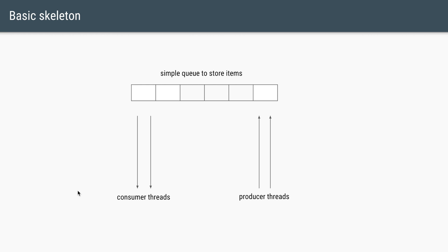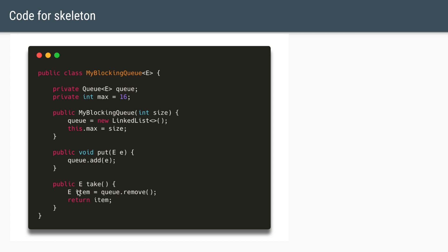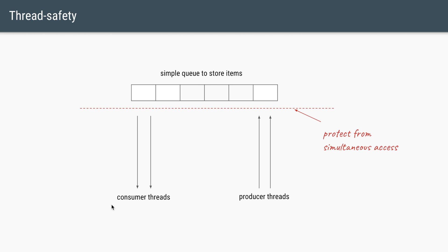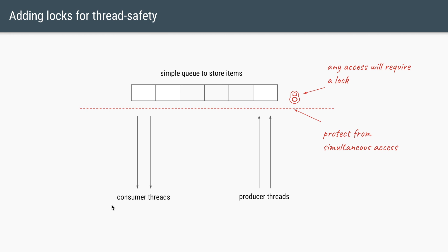Let's implement a custom blocking queue using locks and conditions. We have a class BlockingQueue with a generic type E for the items stored. We create a simple queue initialized with a LinkedList in the constructor, take the maximum size as a parameter, and have two methods — put to add to the queue and take to remove from it. Since multiple threads will access the same queue, we introduce a lock so any thread must acquire it before accessing the queue.